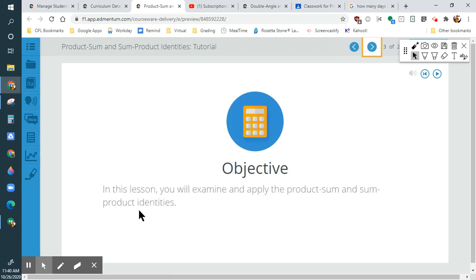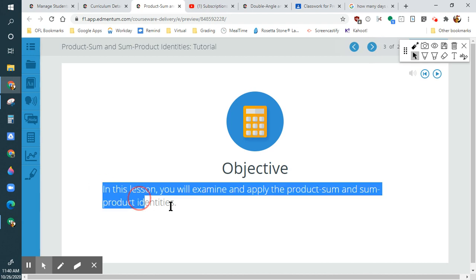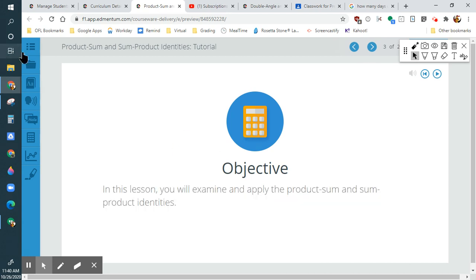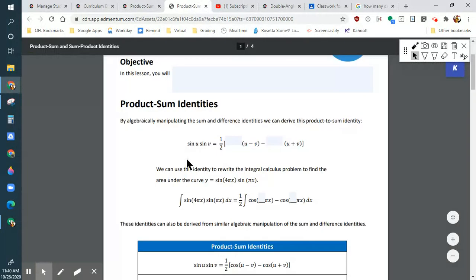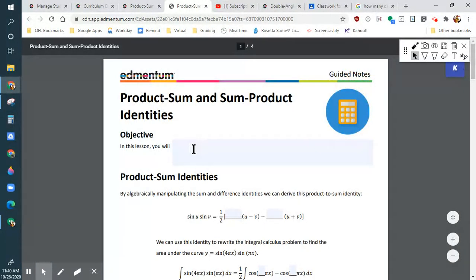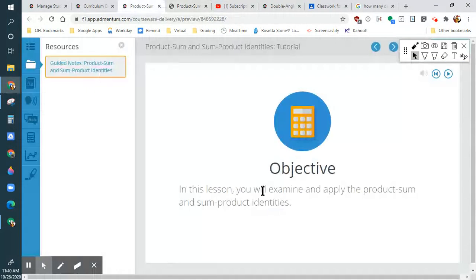So let's take a look at this one. Our objective in this lesson is to examine and apply product-sum identities. I swear these objectives started off really good and then after a while they just kind of went. Remember guys, the guided notes are very helpful for these so you can always fill these out while you're watching the video.